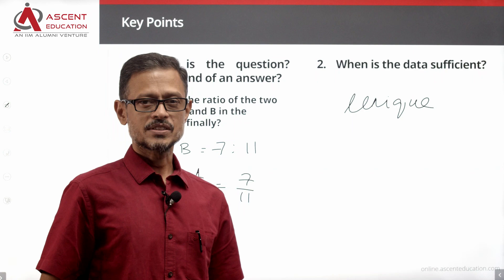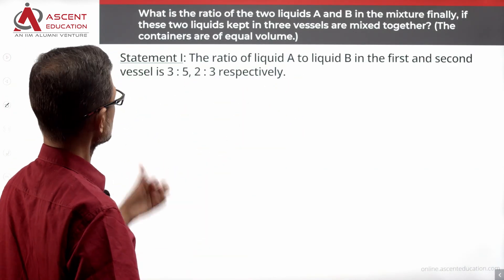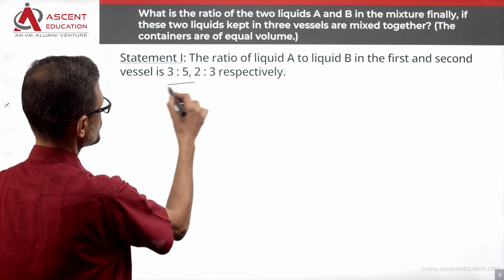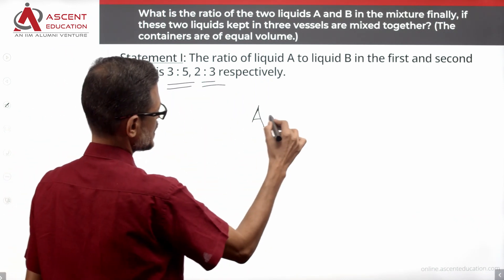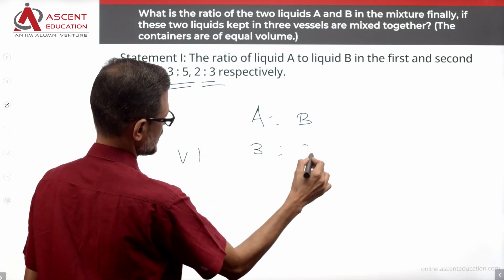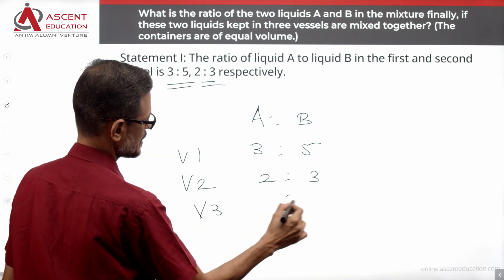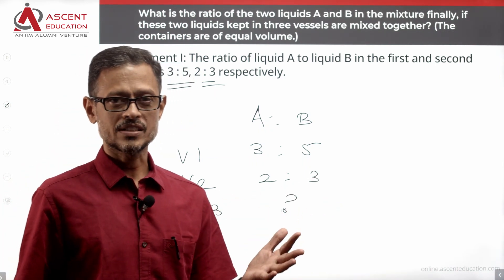Take a look at the statements. Start with statement 1. Statement 1 alone: what is the ratio of liquids A and B in the first and second vessel is 3 is to 5, 2 is to 3. A is to B, vessel 1 ratio is 3 is to 5. Vessel 2 ratio 2 is to 3. Vessel 3 ratio is not given. So statement 1 alone is not sufficient.